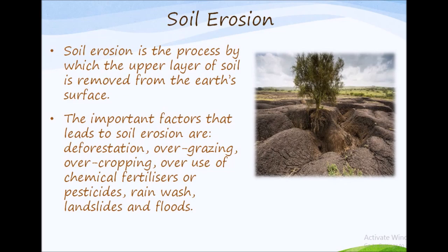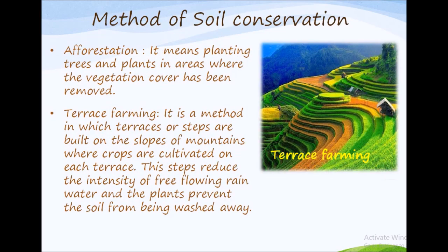Now let's talk about methods of soil conservation. The first method is afforestation — planting trees and plants in areas where the vegetation cover has been removed. The second method is terrace farming — a method in which terraces or steps are built on the slopes of mountains where crops are cultivated on each terrace. These steps reduce the intensity of free-flowing rainwater and the plants prevent the soil from being washed away.